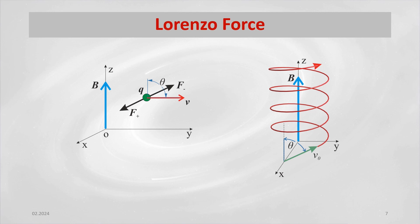The Lorentz force arises due to the interaction of charged particles with the magnetic field. The magnitude of the force f is given by f equals q times v times b times sin theta, where q is the charge of the particle, v is its velocity vector, and b is the magnetic induction vector, and theta is the angle between the vectors v and b.